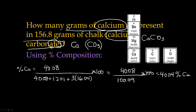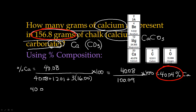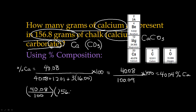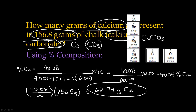We're not looking for percent calcium — we're looking for grams of calcium. We're given 156.8 grams of calcium carbonate, and we know there's 40.04% calcium in calcium carbonate. So all we have to do is multiply: 40.04 divided by 100, times 156.8 grams, and that ends up being 62.79 grams of calcium. That's what we're looking for.